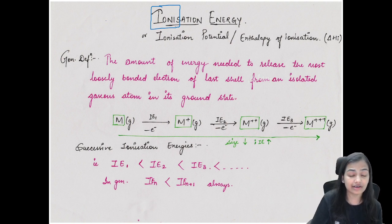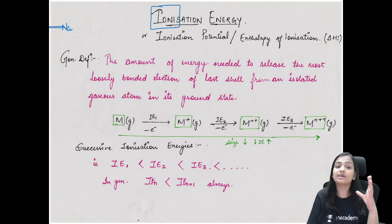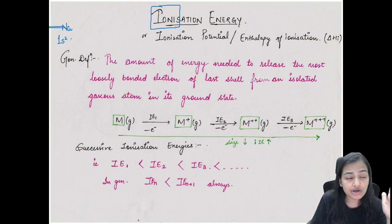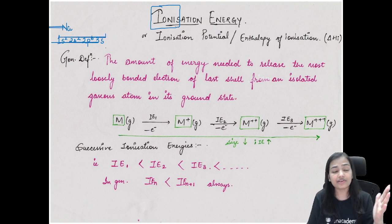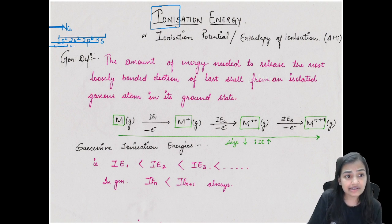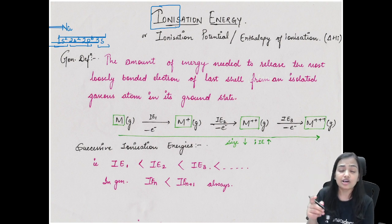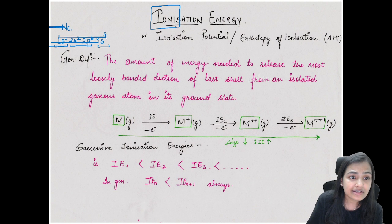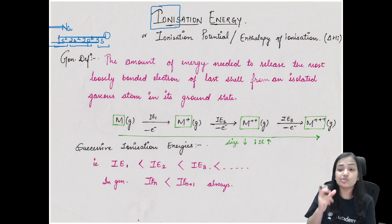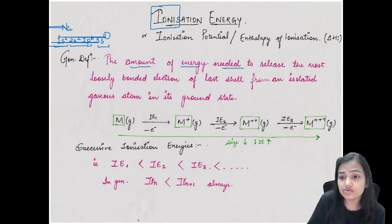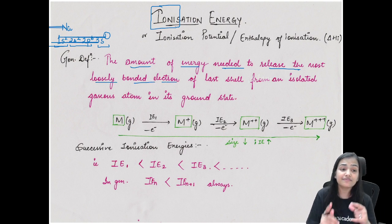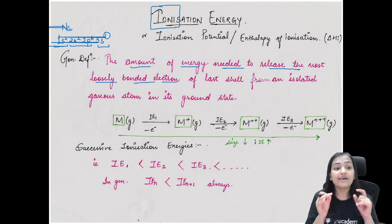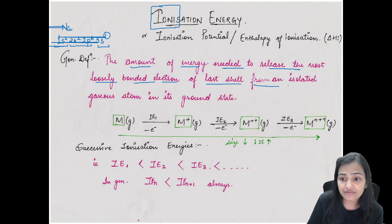Let me give a quick example using sodium. The electronic configuration of sodium is 1s², 2s², 2p⁶, and 3s¹. The innermost shell is 1s², then 2s² 2p⁶, and the outermost shell is 3s¹. The most loosely held electron is 3s¹ because it is very far from the nucleus. The amount of energy needed to release the most loosely bonded electron from an isolated gaseous atom is the ionization energy.